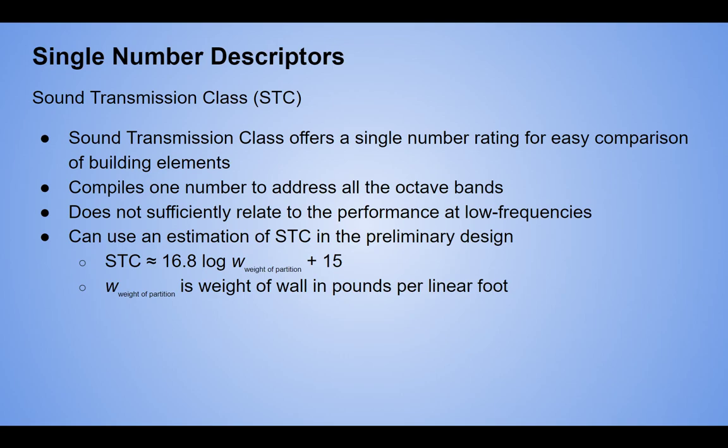A key trend: NC is weighted toward low frequencies, dBA doesn't account for low frequencies, and STC doesn't address low frequencies well either. If you're not considering low frequencies in measurement and not blocking them in isolation design, you'll have a lot of low end transferring from one space to another. You can estimate STC with the formula: 16 log of the weight of the partition plus 15, or more precisely 16.8 log of the weighted partition plus 15.